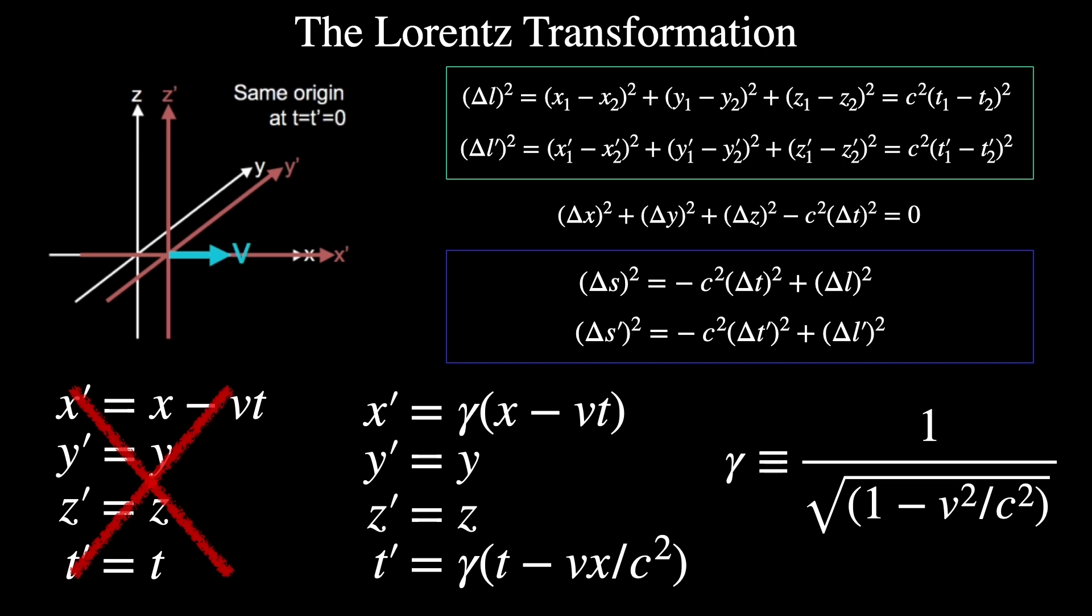We usually denote that interval as delta s squared, as you see below. In our little example with the light bulbs, we see that the events connected by the speed of light are called null spacetime intervals because they equal zero.